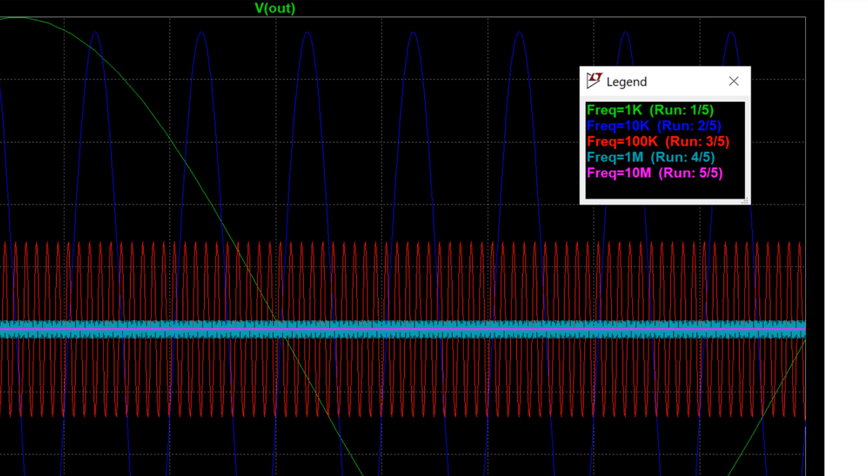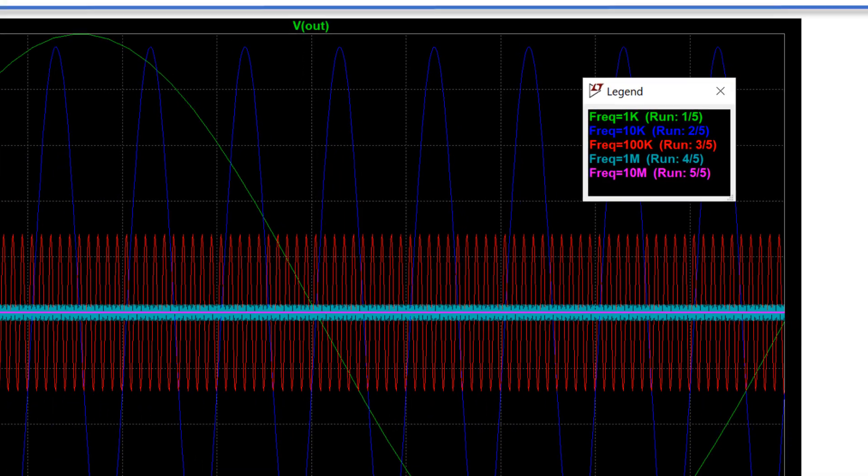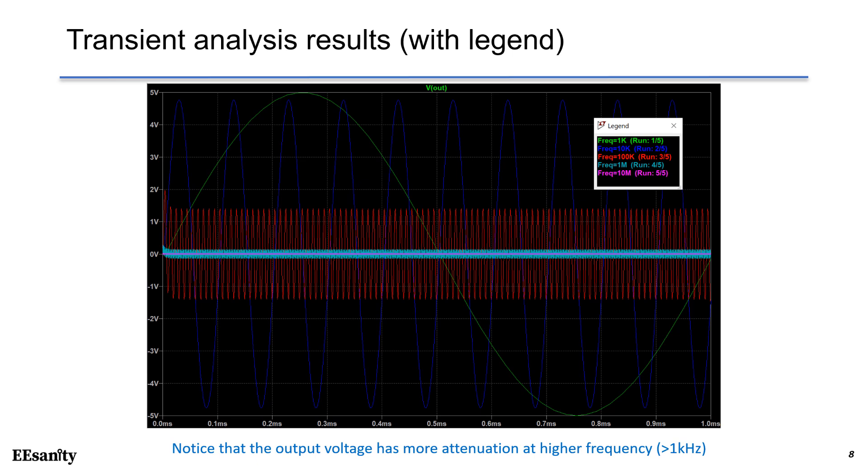Now you have legend to show you the frequency. For example, 1 kHz is drawn in green, 100 kHz is plotted in red. Notice that at 1 kHz, the magnitude is almost the same as input, which is plus 5V to minus 5V, with no attenuation.